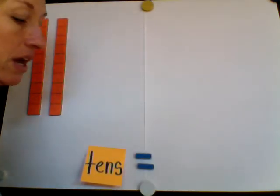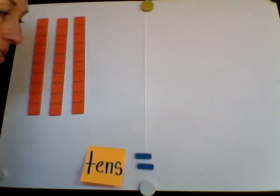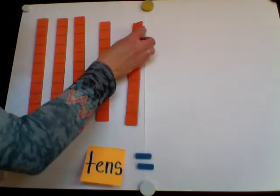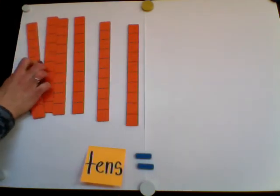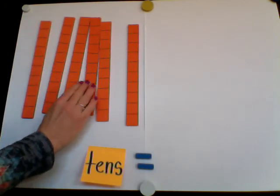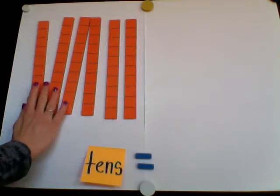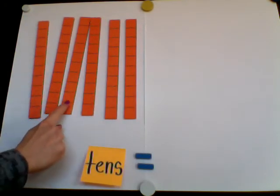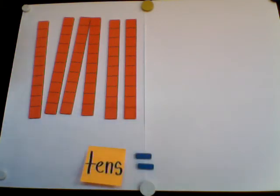So I have 1 box, 2 boxes, 3 boxes, 4 boxes, 5, and 6 boxes full of 10 jelly beans. So now I know that I have 1, 2, 3, 4, 5, 6 tens.